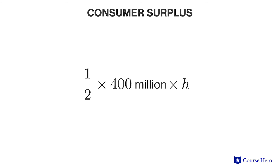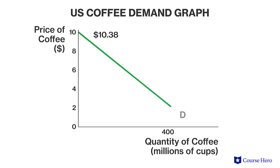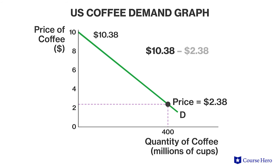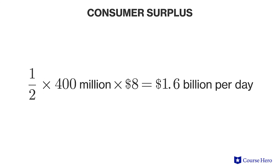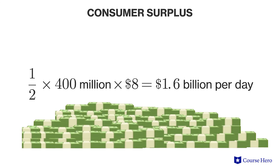The base of the triangle is 400 million and the height of the triangle is $8. In this example, the demand curve crosses the price axis at $10.38 and the price line is at $2.38, so the height is $10.38 minus $2.38 for a total of $8. The total consumer surplus in this example is $1.6 billion, calculated as one half times 400 million times $8, which equals $1.6 billion per day.